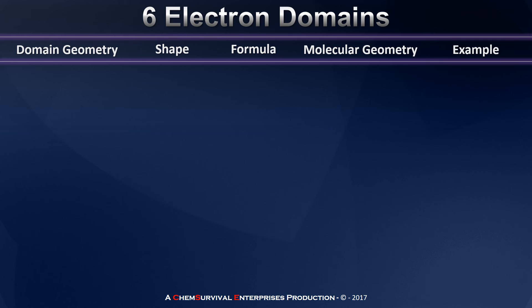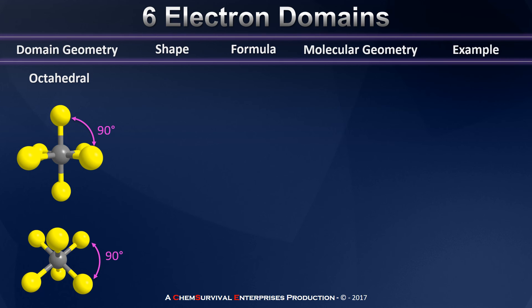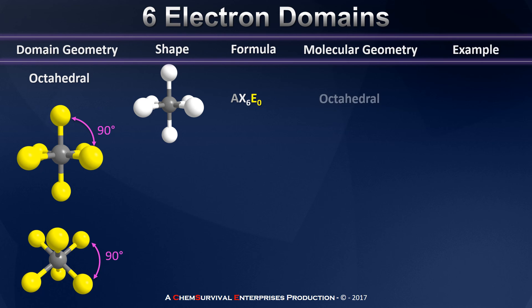Finally, let's consider possibilities with six electron domains. When there are six electron domains around a central atom, it adopts a geometry called octahedral. Connecting all of the domains together with lines leads to an octahedron, which is how this geometry got its name. Within this octahedral geometry, all of the domains are 90 degrees from one another, so there are no preferred positions. A compound with all six domains involved in bonding — an AX6E0 compound — has a molecular geometry that is the same as the domain geometry, octahedral.